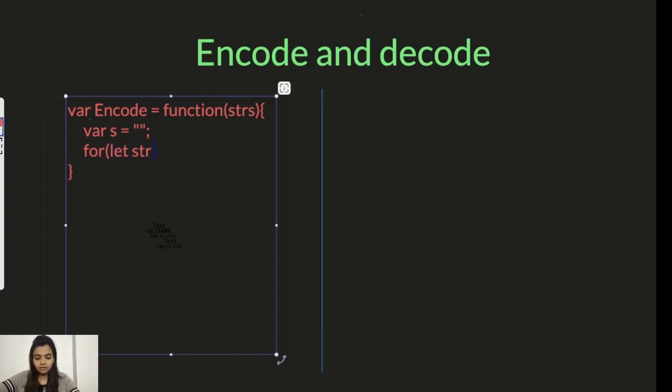Let string of strings. This will go through every string present in the array. So now what do we do for each string? For each string we find the length and append a hash and the string to it. So s equals string.length, find the length of each string, add a hash and also add the string itself. So this will finally give us our output. We just return the string s.